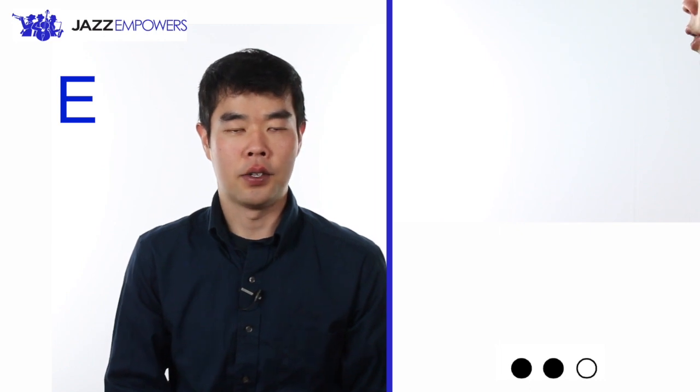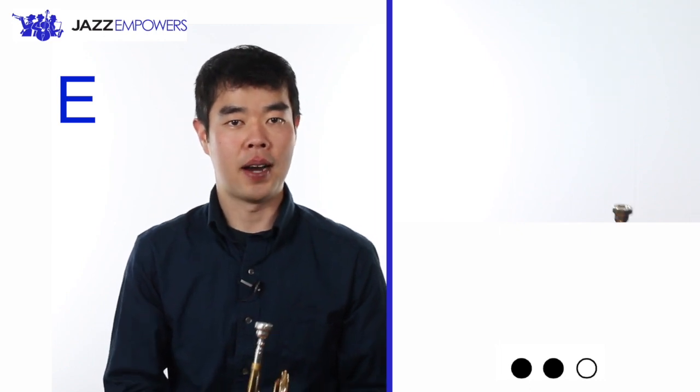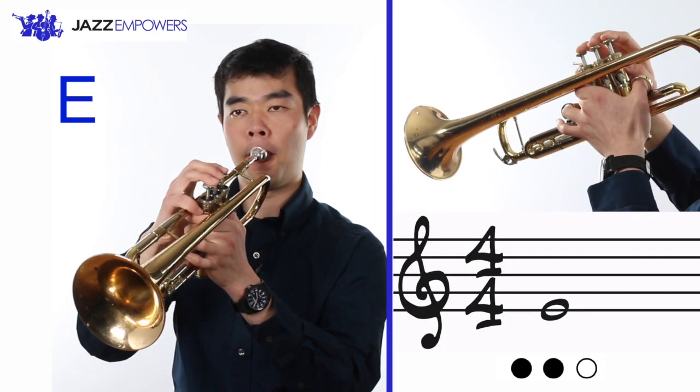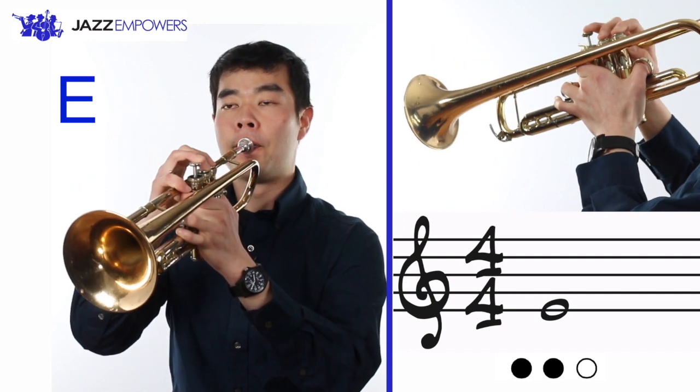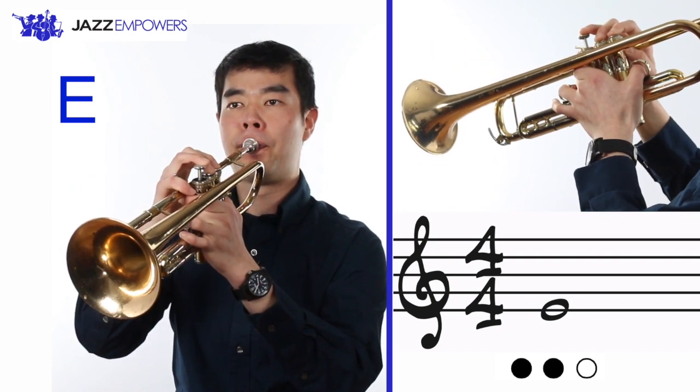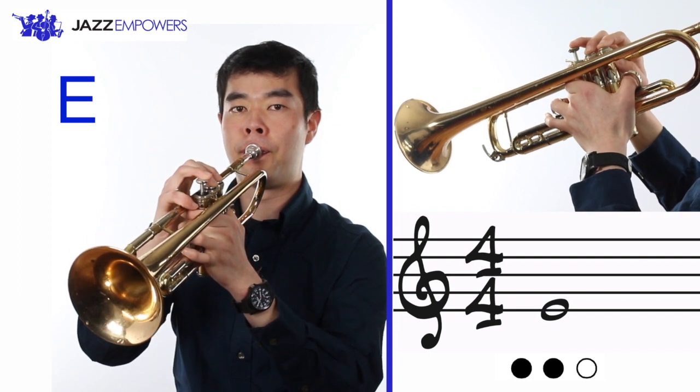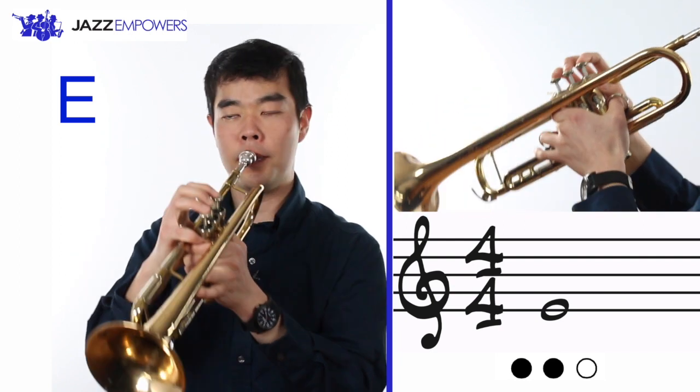The third note in the scale is E, and it's played with the first and second valves down. In treble clef, E is on the bottom line. Now try playing it with me.